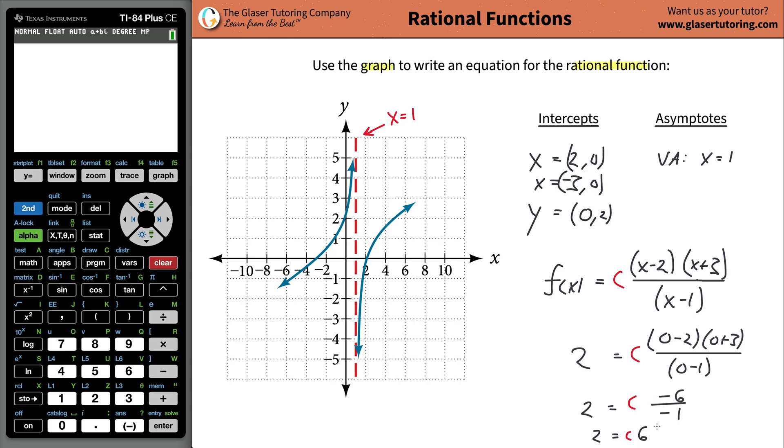It's being multiplied by the six. So now all you have to do is just divide both sides by six and C will equal one third. Or two sixths.